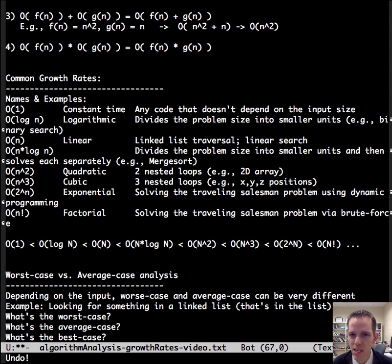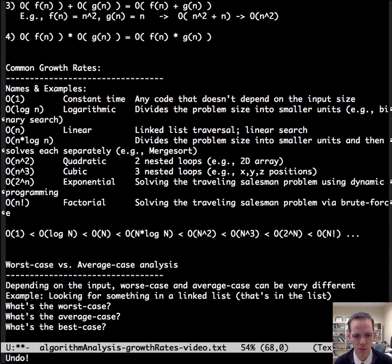And there's also actually a best case. What would be the best case for looking for an item in a list? It'd be that the item is in the first position and the first one we check, woohoo, we found it. And so that's an illustration of worst case, average case, and best case.